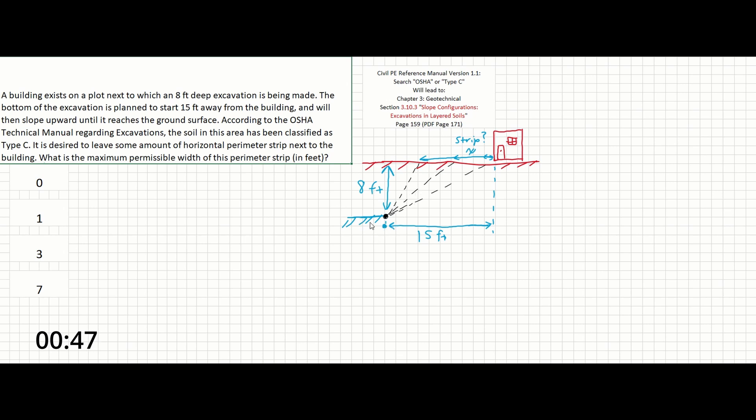So we have our excavation depth here, the total distance away from the building in question here, and we need to know how much distance might be available for a perimeter strip, depending on the value of the slope or the steepness of the grade.